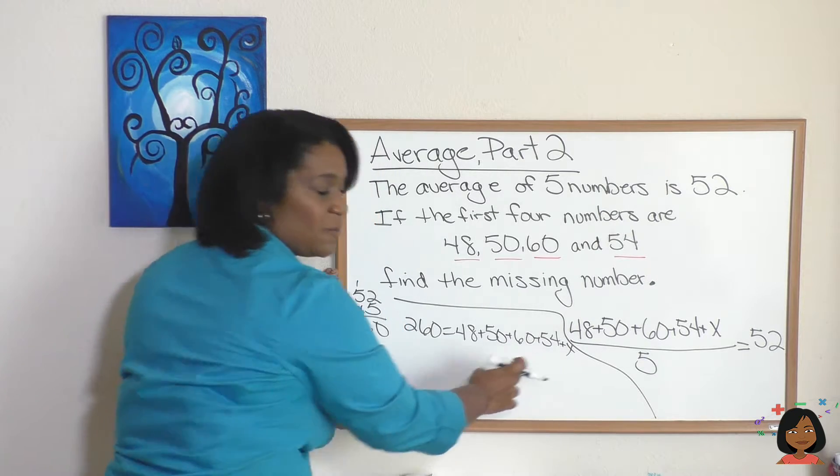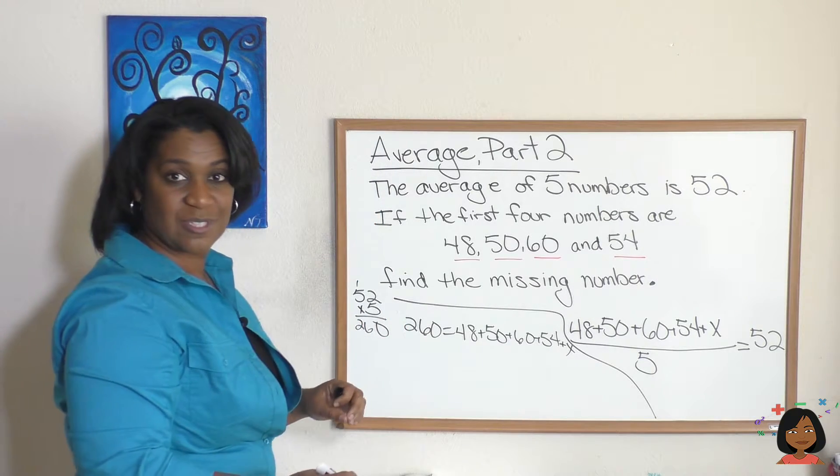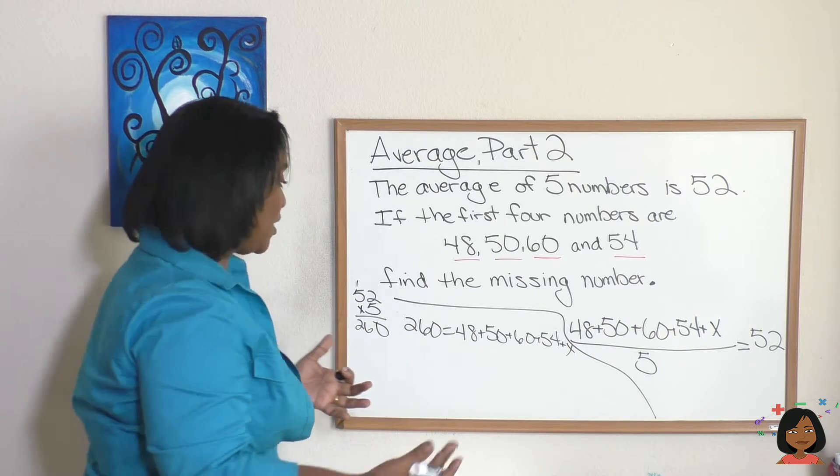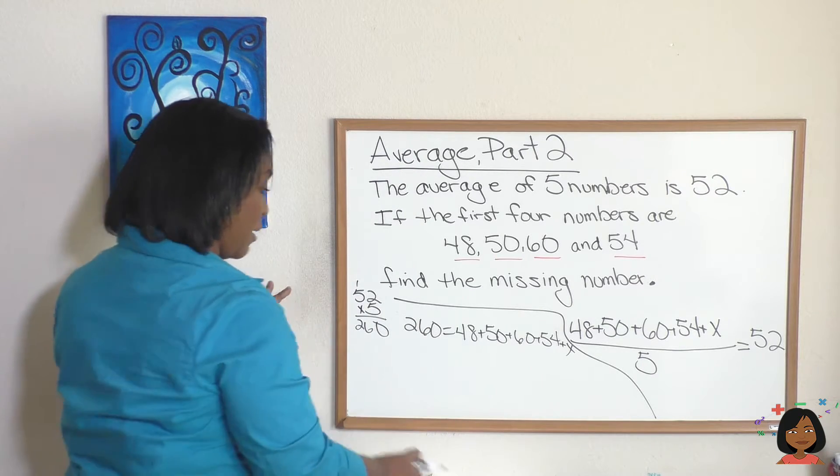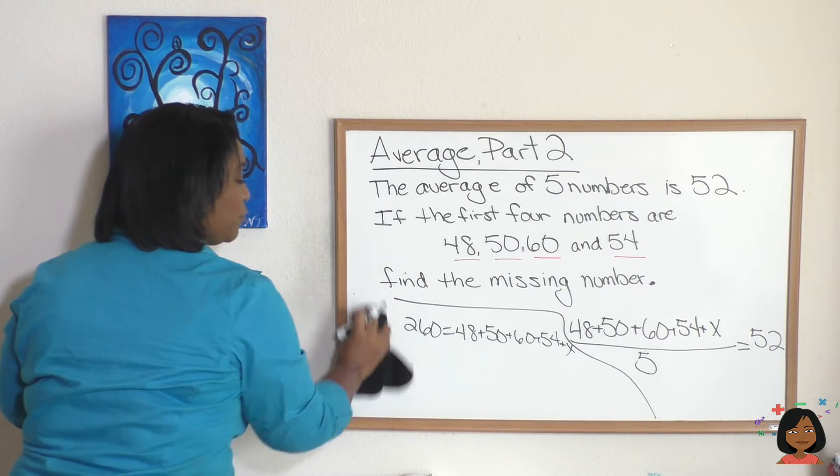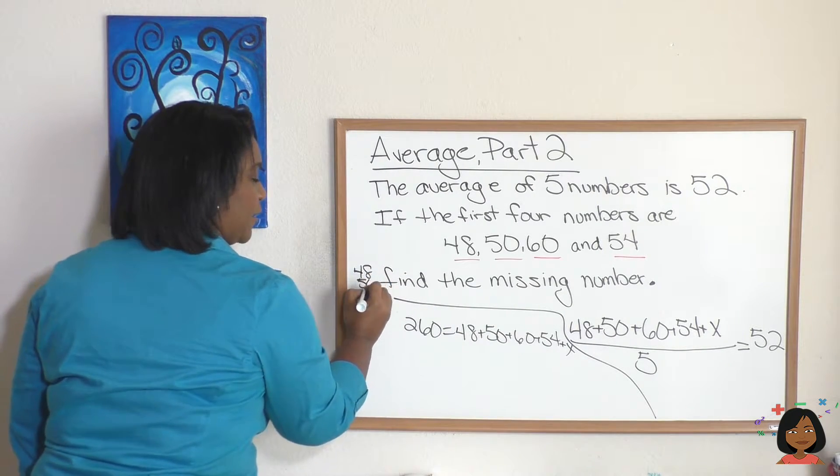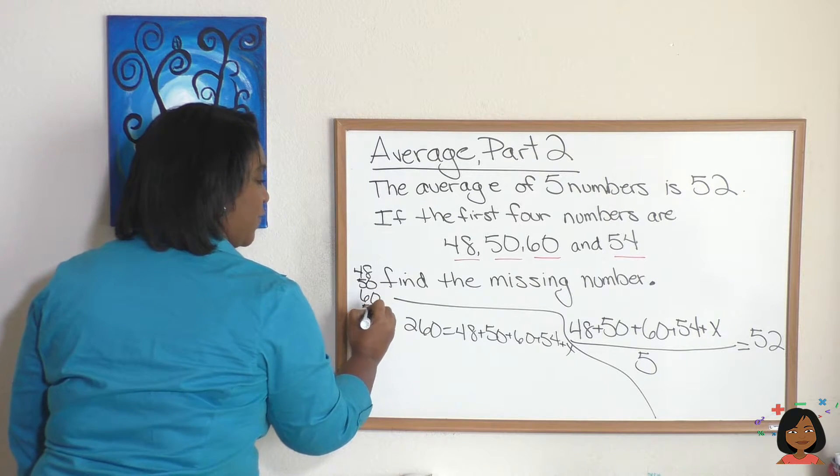We're going to add up all of these and subtract it from 260, and whatever is left over is going to be our missing number. So here we go. I'm going to erase to make more room.